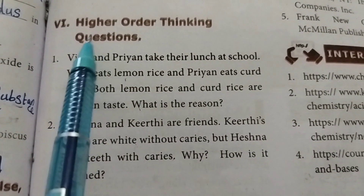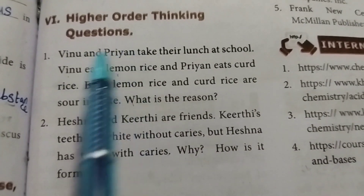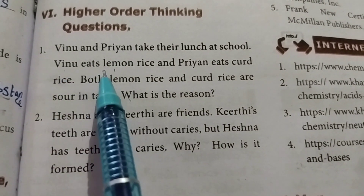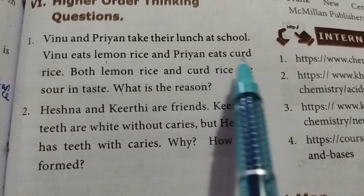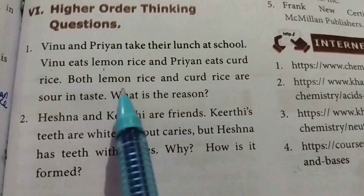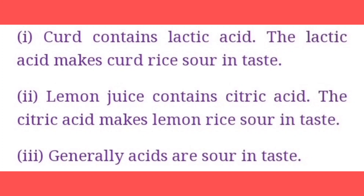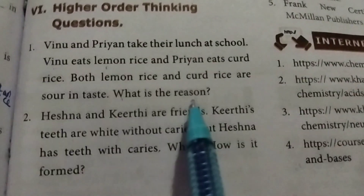Roman numeral VI: higher order thinking questions. First one: Vinu and Priyan take their lunch at school. Vinu eats lemon rice and Priyan eats curd rice. Both are sour in taste. What is the reason? Curd contains lactic acid which makes curd rice sour. Lemon juice contains citric acid which makes lemon rice sour. Generally, acids are sour in taste.